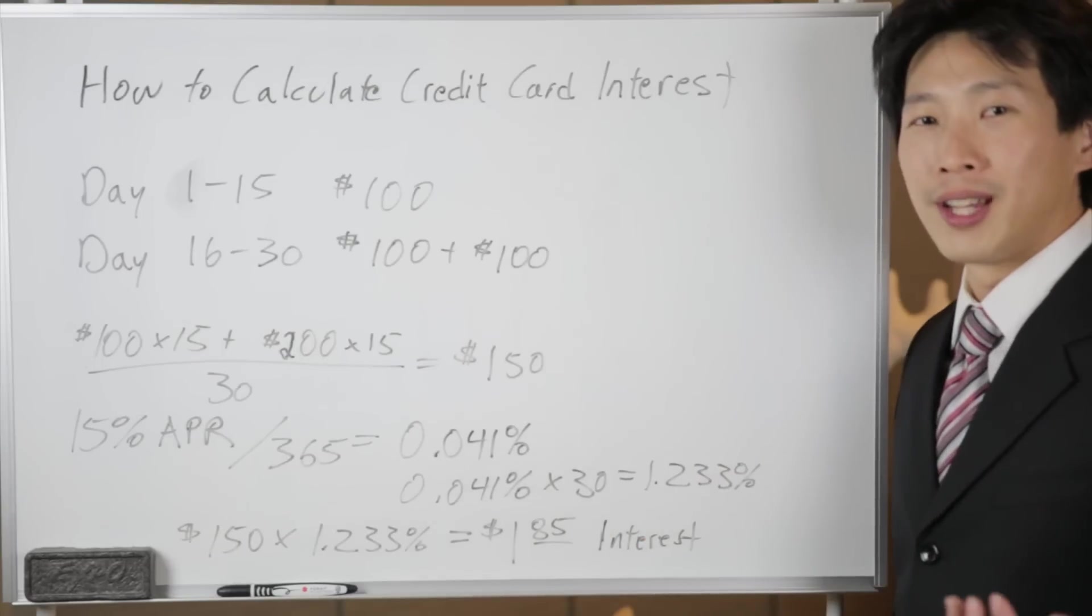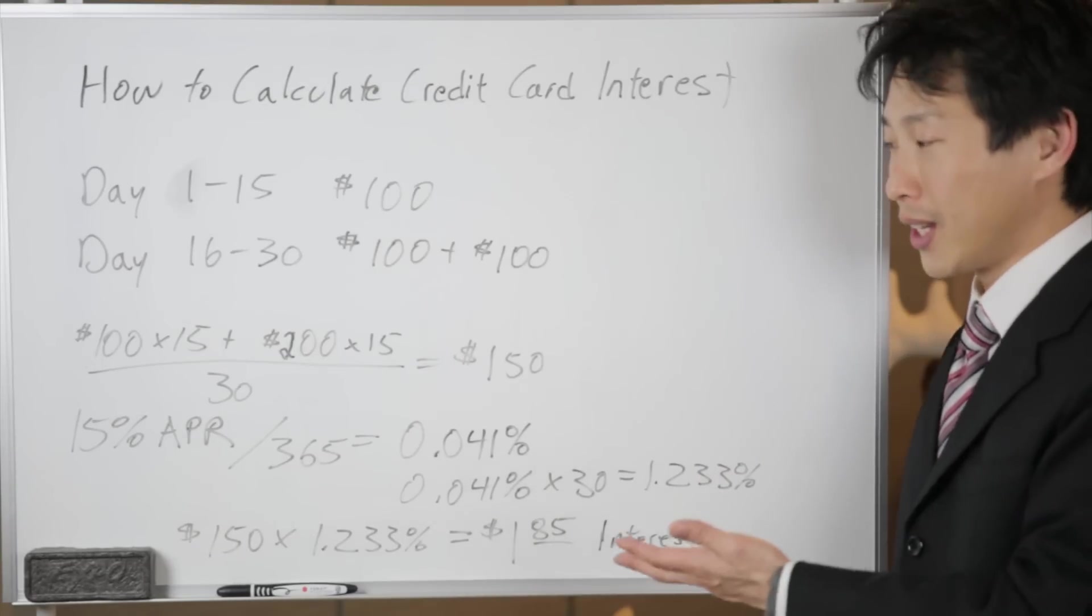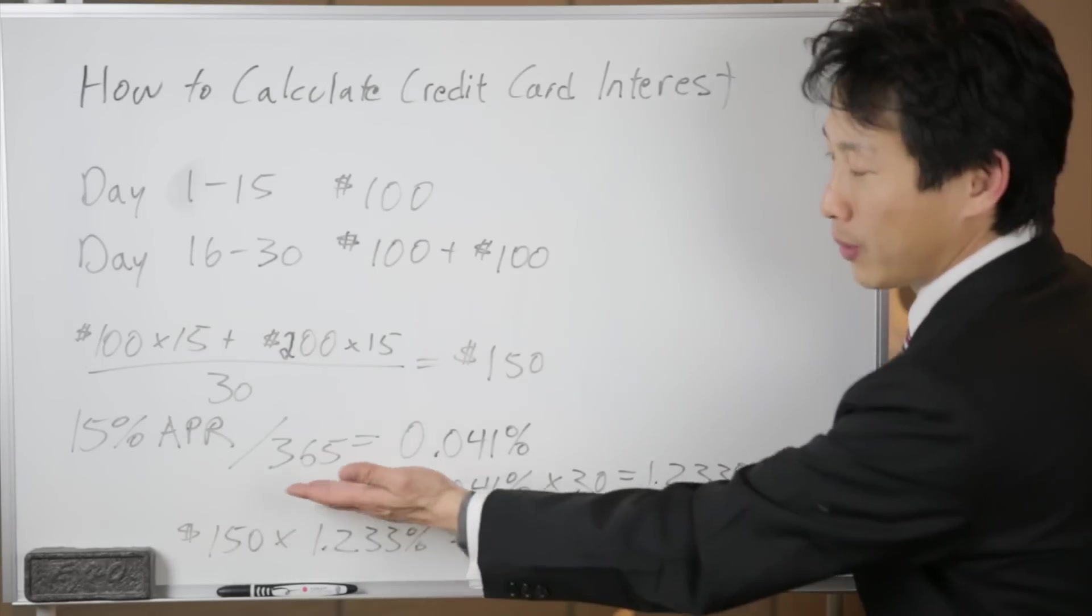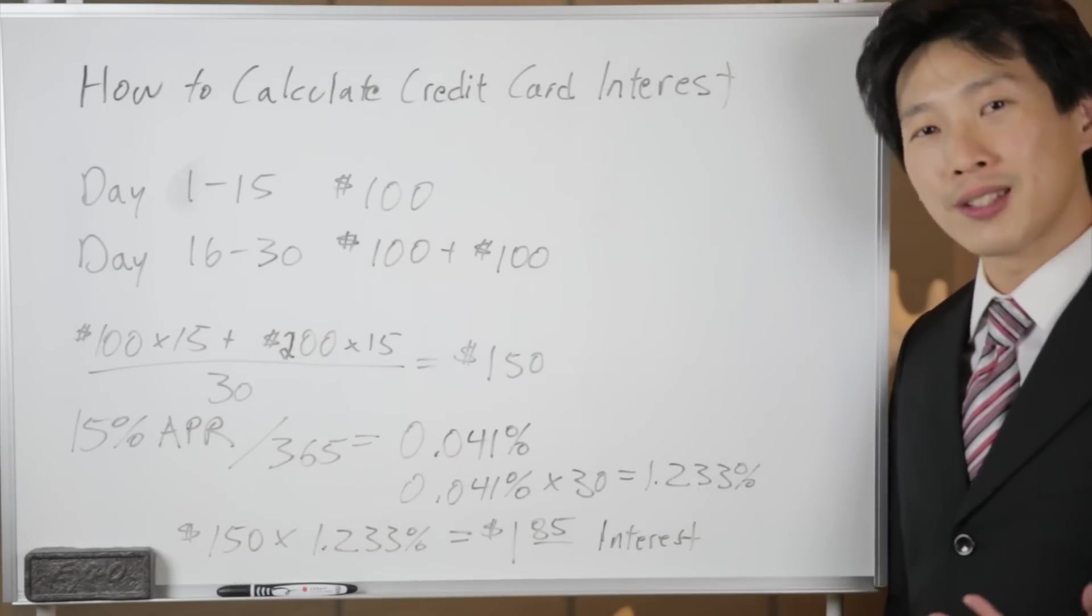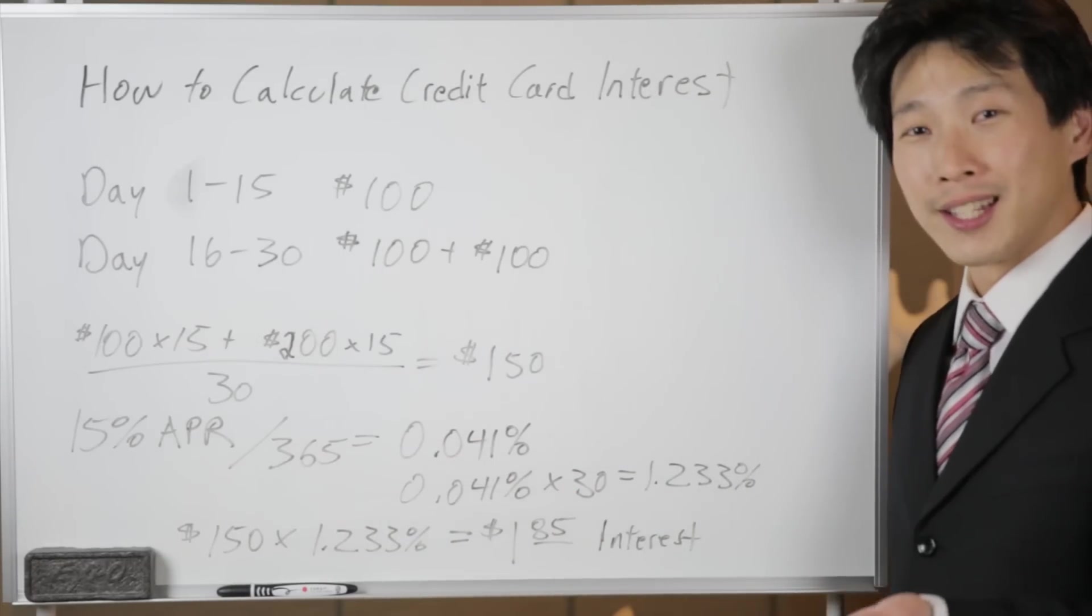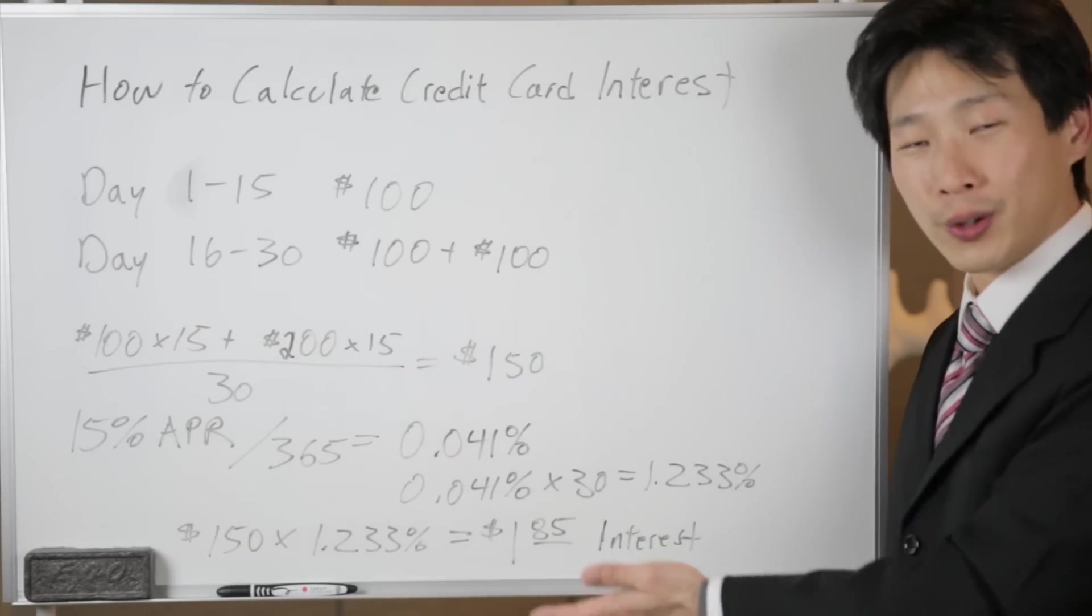So roughly you can divide this by 12 in order to get it. But we want to divide it by 365 days because some months have 28 days, some have 29, some have 30 or 31. So we divide by 365.